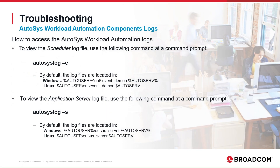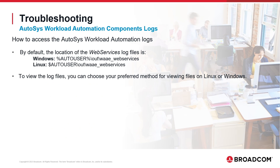This section will show how to display the Autosys component logs and where they are located. To view the scheduler log file, execute the autosys log command with the option. By default, the log files are located in specific directories on Windows and Linux. To view the application server log file, execute the autosys log command with the yes option. By default, the log files are in specific directories on Windows and Linux. You can find the Autosys web services logs in designated directories on Windows and Linux. You can choose your preferred method for viewing files on Linux or Windows.